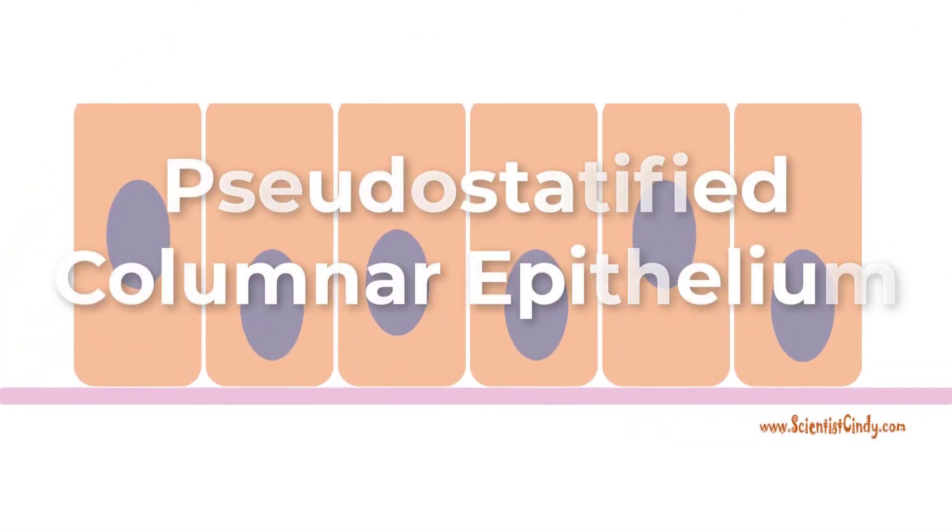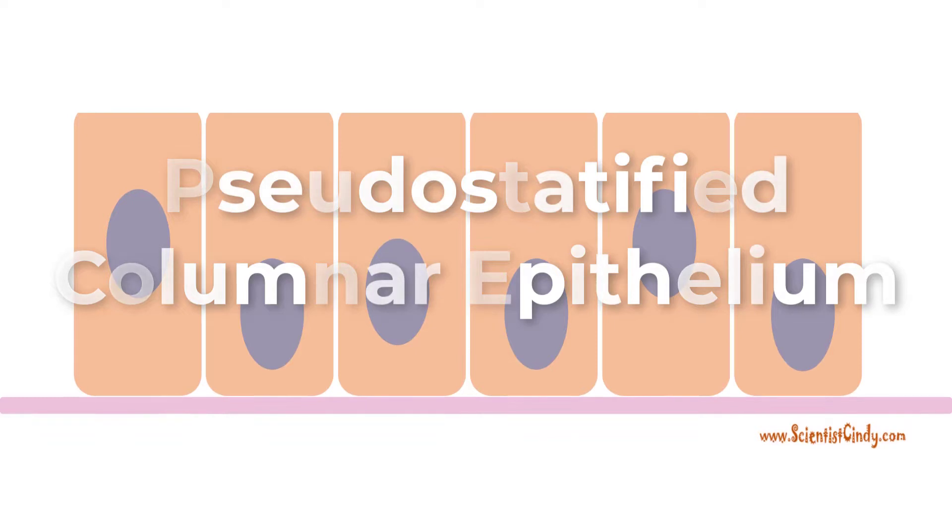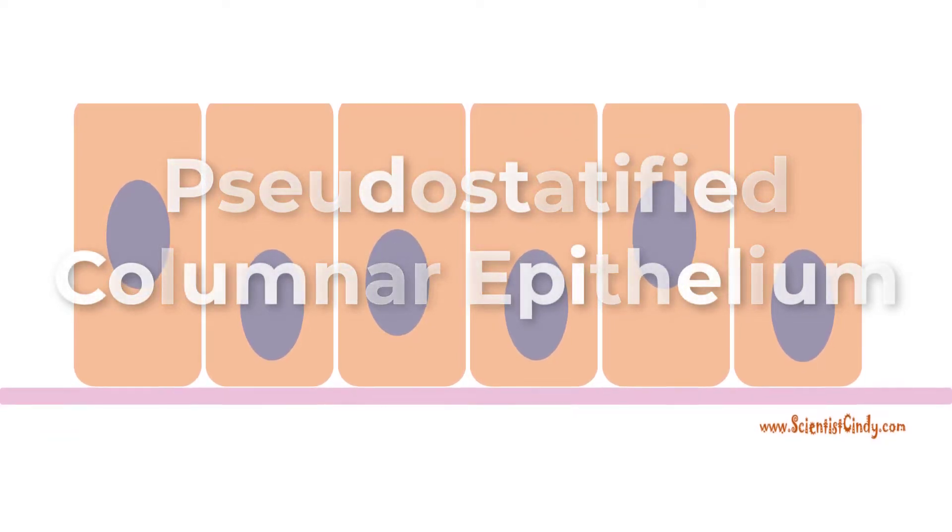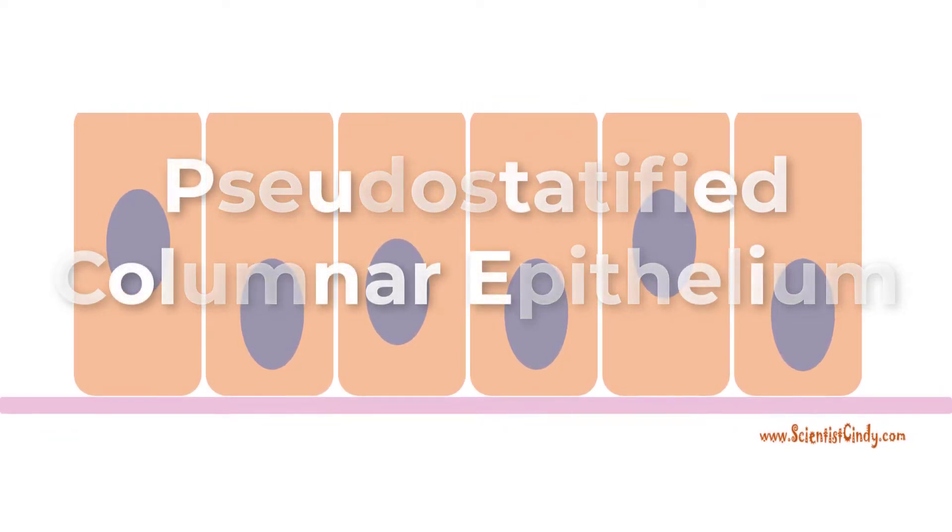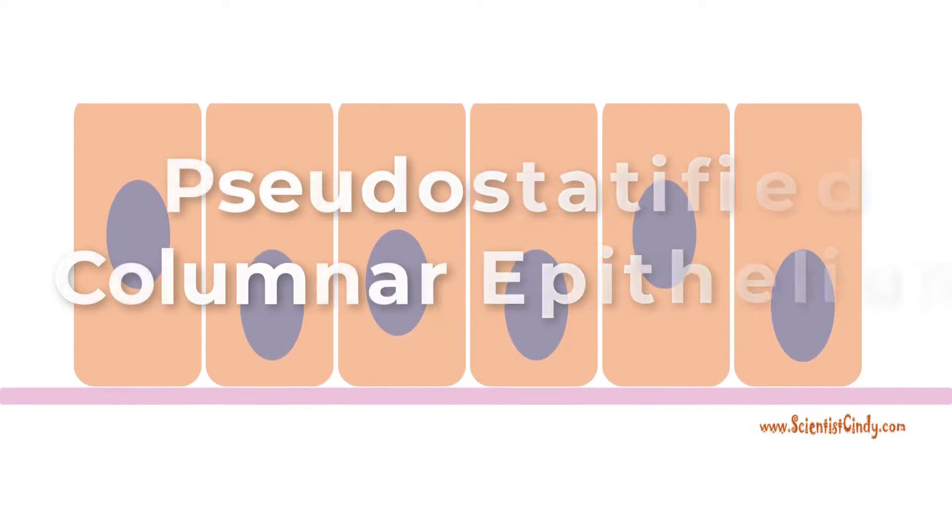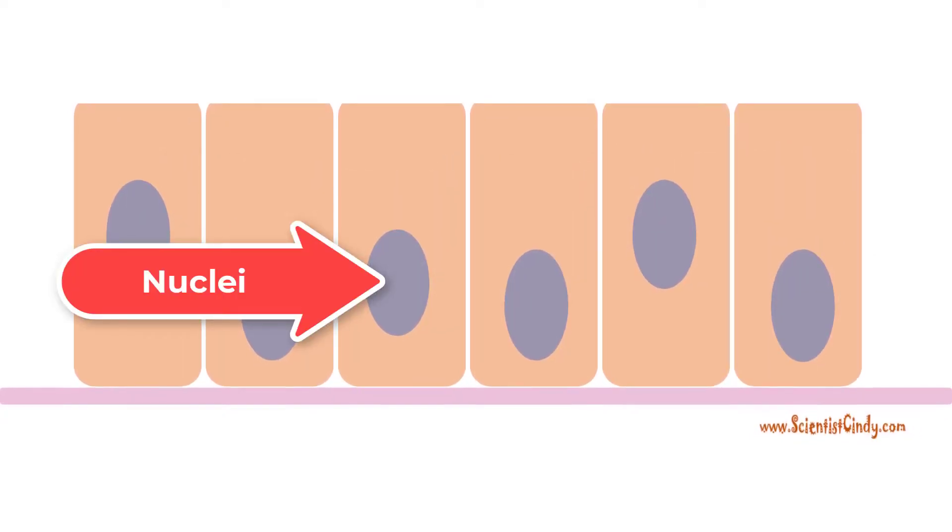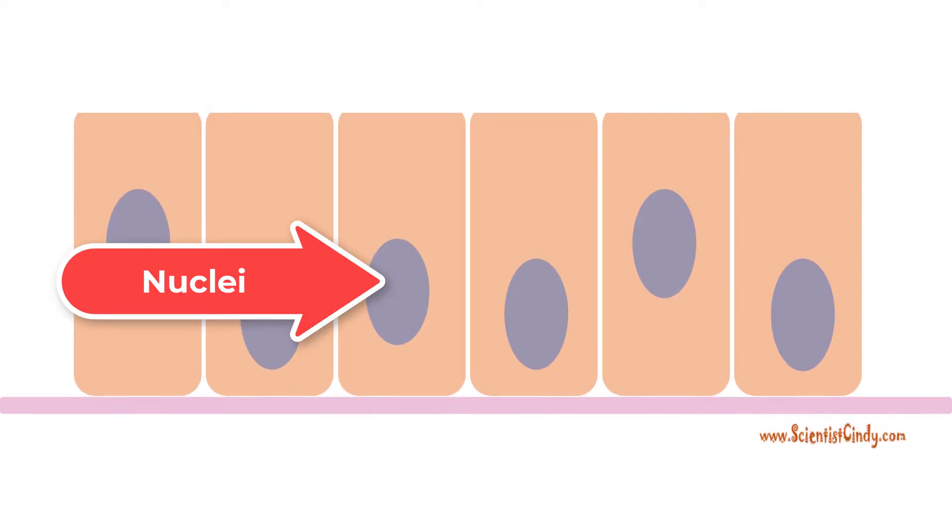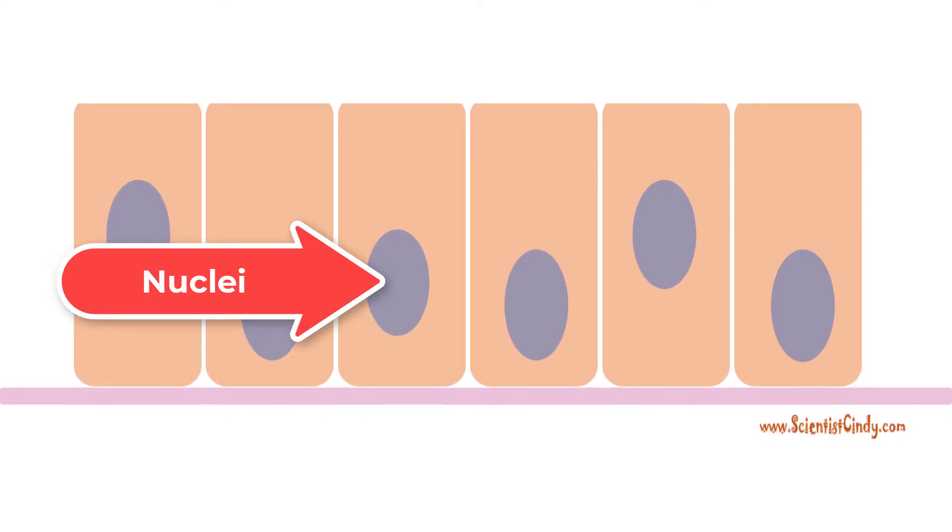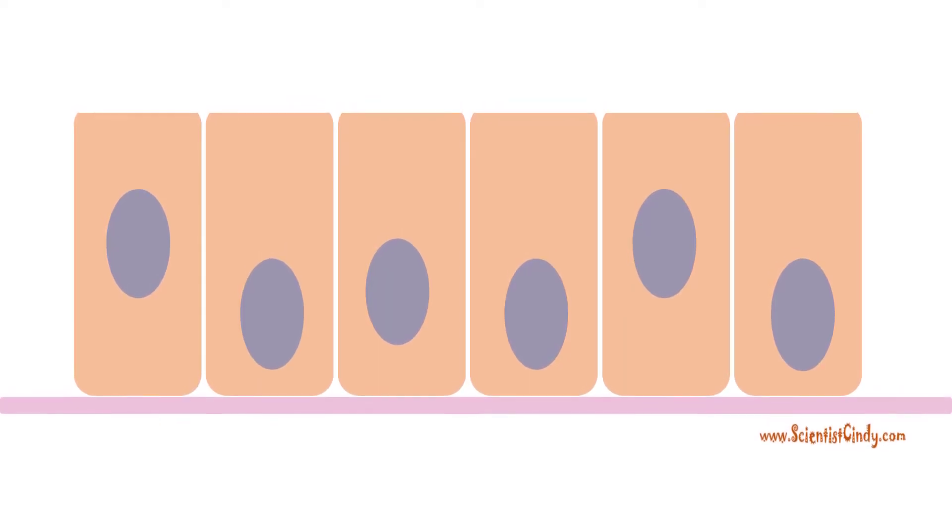Pseudostratified columnar epithelium. Pseudostratified columnar epithelium is a type of epithelium that appears to be stratified, but it consists of only a single layer. In pseudostratified epithelium, nuclei of neighboring cells appear at different levels rather than clustered at the basal end. The arrangement gives the appearance of stratification, but in fact, all the cells are in contact with the basal lamina.